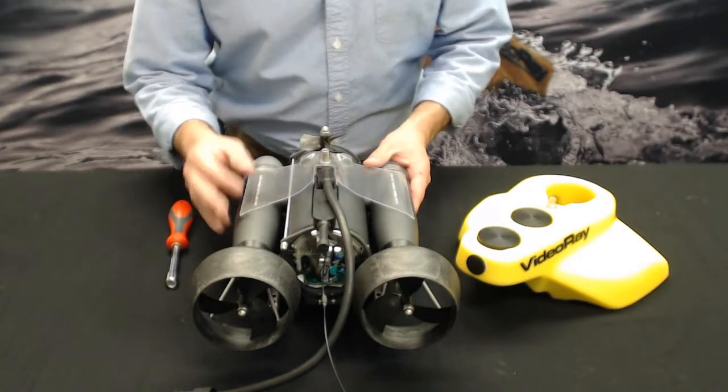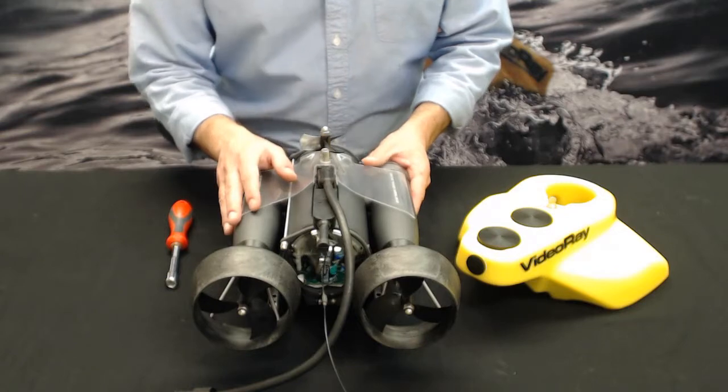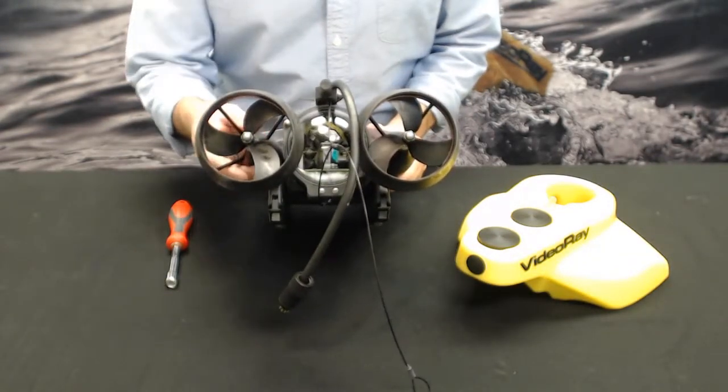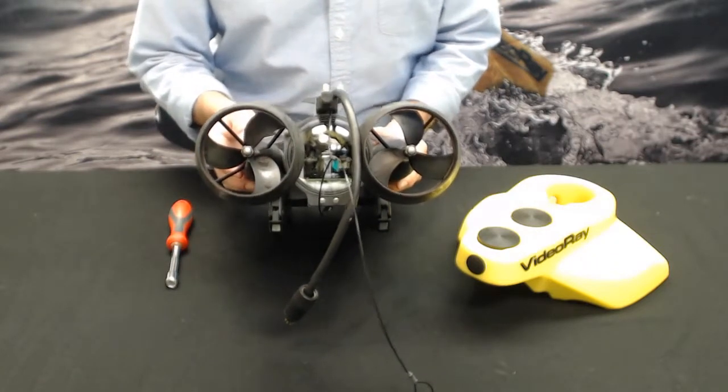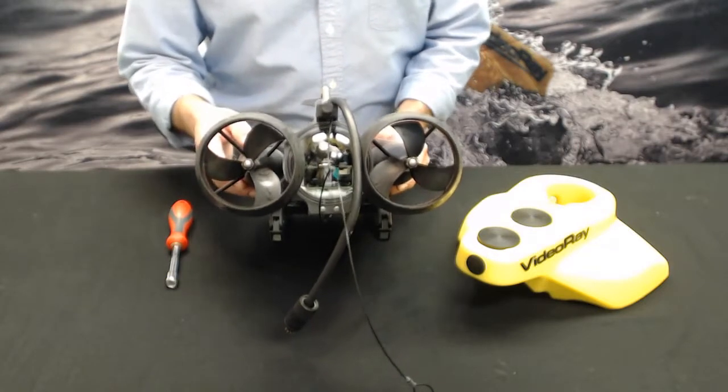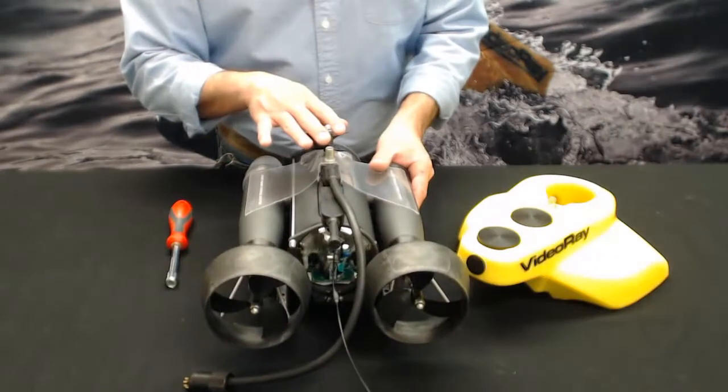I'd like to talk about the propellers on the VideoRay ROV Submersible. There are three propellers on the VideoRay Pro 4, and it's the same for all the models. The old Pro 3s, GTOs, Scouts, and Explorers all have two horizontal thrusters and one vertical thruster that controls depth.